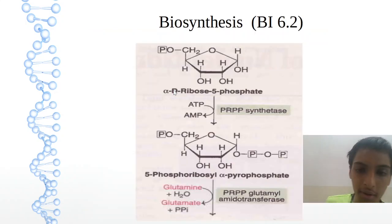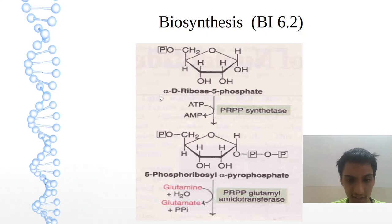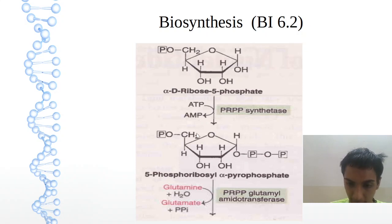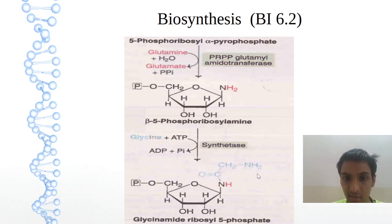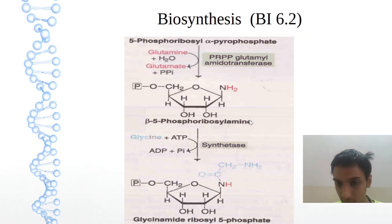Now we go for biosynthesis. Ribose 5-phosphate — no need of alpha-D, just ribose 5-phosphate. On PRPP synthase, we have PRPP. Then on glutamyl amidotransferase, we are getting phosphoribosylamide on addition of glycine.